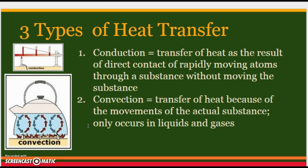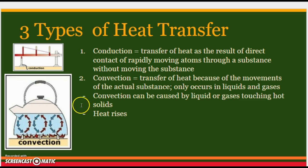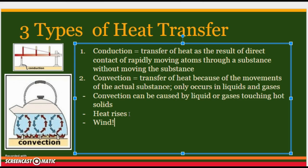Convection only occurs in liquids and gases because atoms in the solid state are stuck — they can just vibrate faster or slower. In liquids and gases, atoms can actually physically move. Convection can be caused by liquids or gases touching hot solids. The liquid atoms are the ones that move, and remember heat rises. Think about an example that affects your life every single day with gases — hot air rising. The big example is wind. Especially in winter in Minnesota, you know the top floor of a building is usually much warmer than the basement because heat rises and that causes convection currents.